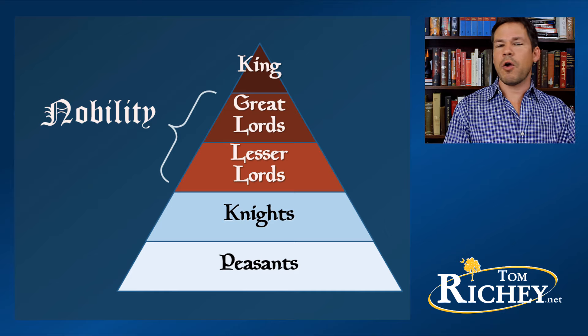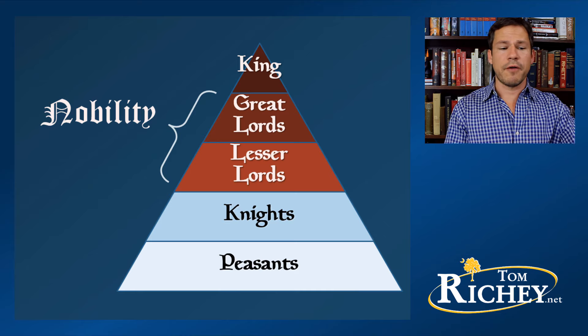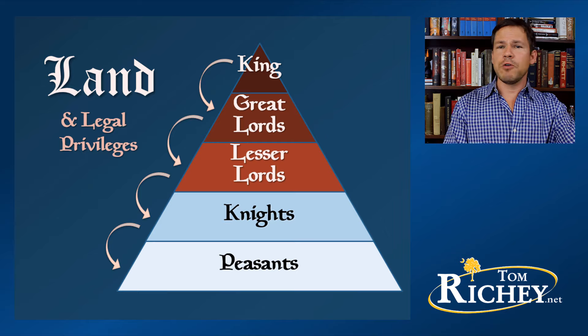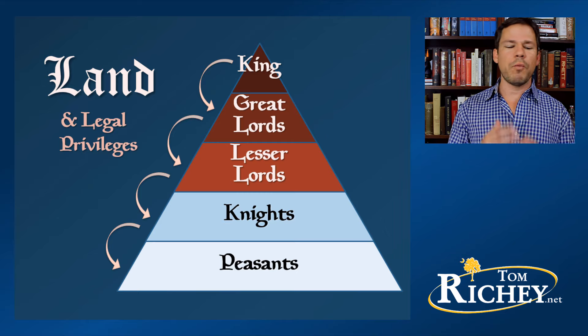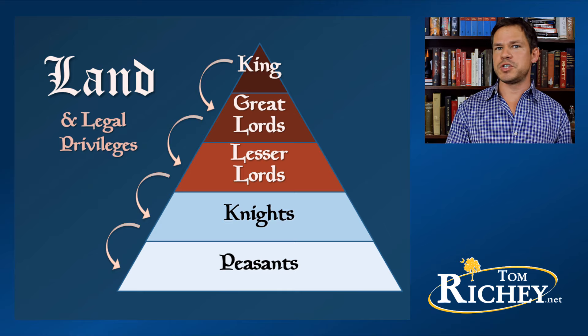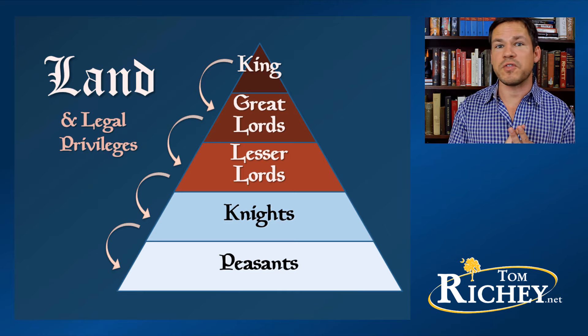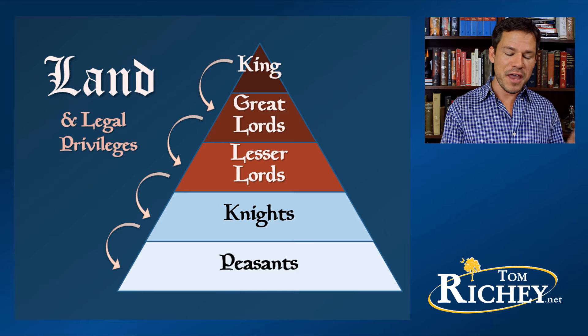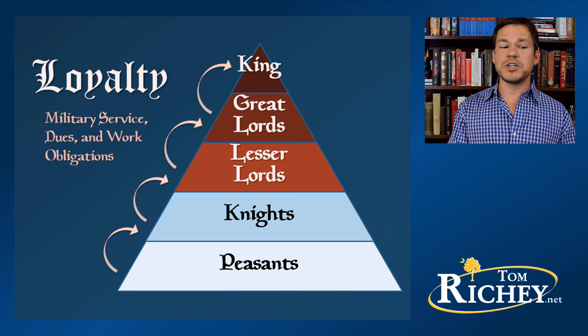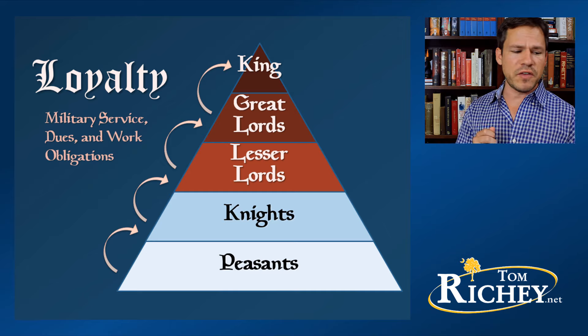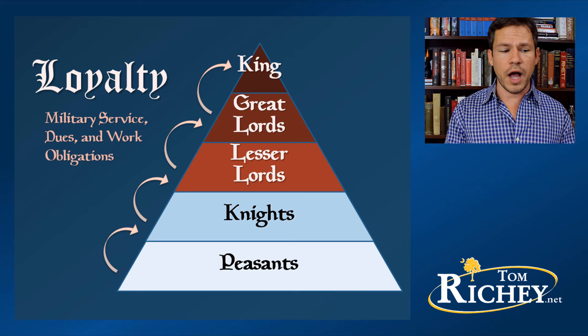At the bottom of the hierarchy you have the peasantry. On one hand there is the grant of land and legal privileges — even for the peasants, such as the privilege to use the lord's oven, or simply the privilege of protection. On the other side, you had loyalty manifested as military service, dues, or work obligations. Medieval towns typically existed outside of the feudal hierarchy because they had charters granted directly by the king and did not participate in the life of the manor or owe specific allegiance to any feudal lord.